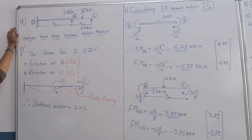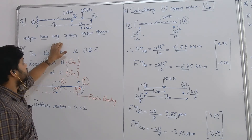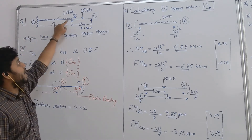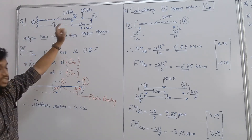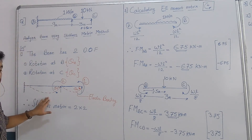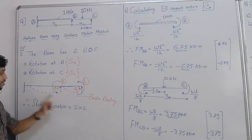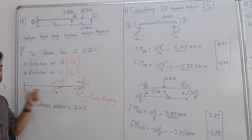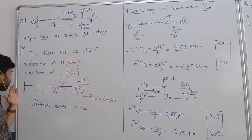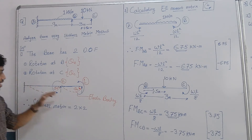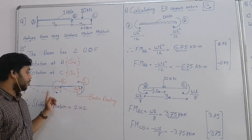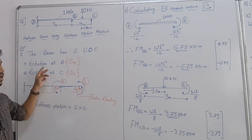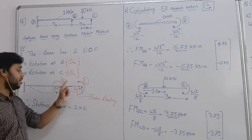The first step is to calculate degrees of freedom. For this given structure there are two degrees of freedom — the beam can rotate at node B and at node C. Looking at the elastic bending diagram, the structure is free to rotate at B and C only. There cannot be any translation, vertical or horizontal, because of fixity at A as well as reactions at B and C. But nodes B and C can freely rotate.